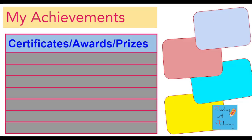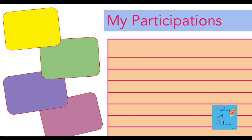The next important part is your achievements. Here you can include whatever awards, certificates, or prizes you have received. You can also write about your past year's exam performance, and if you have photographs related to those achievements, include them too. Then add a participations section — here you can write about activities you participated in but did not win prizes for, and include photographs or a nice collage for those as well.